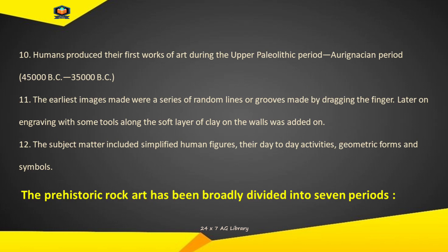Is prakar ka jaadu anushthaan sarvochch niyantran shakti ko prasann karne ke liye manushya ke maanas par prakash daalta hai aur pavitra uddeshya ke liye kala ki shuruaat bhi karta hai. Point 10: Humans produced their first works of art during the Upper Paleolithic period, the Aurignacian period, 45,000 BC to 35,000 BC. Upri Puraapaashaan kaal ke dauraan manushyon ne kala ke apne pahle karyon ka nirmaan kiya, Aurignacian kaal, paintaalees hazaar isa poorv, painthees hazaar isa poorv.